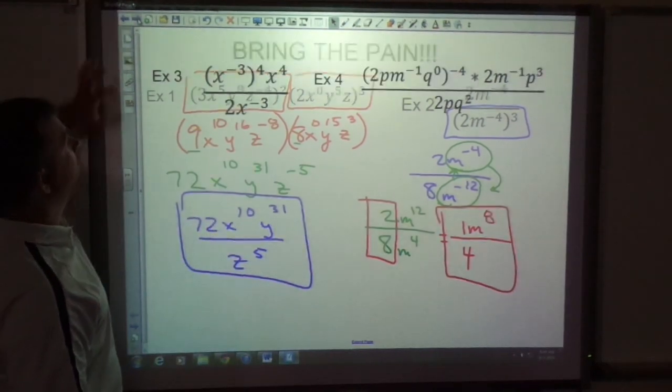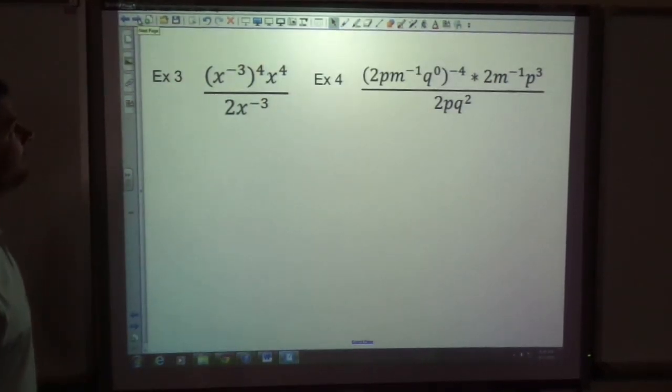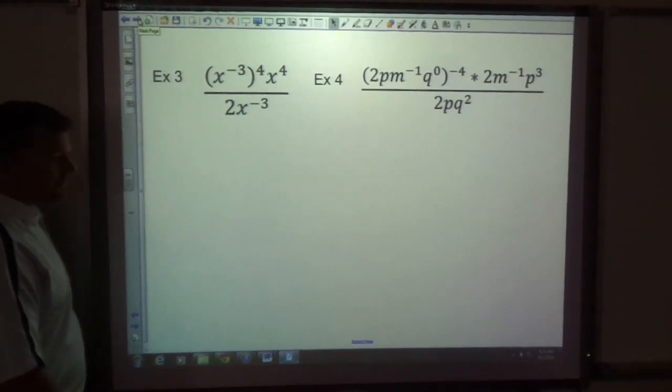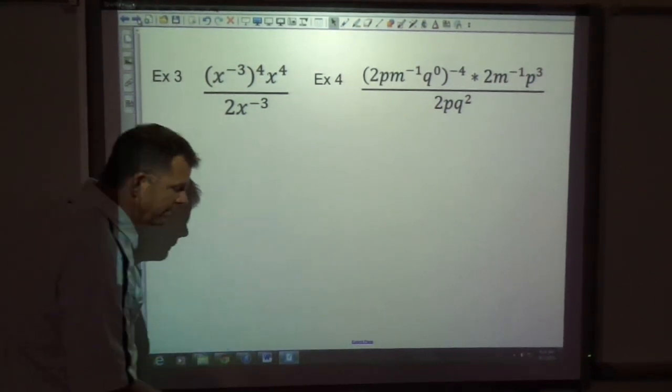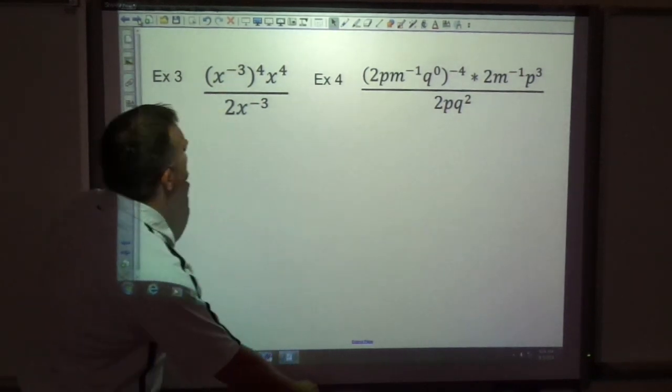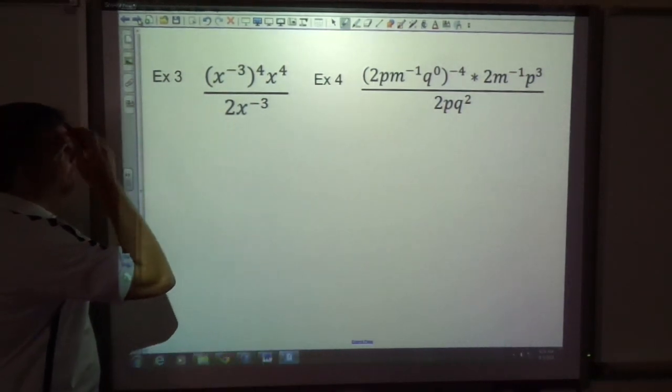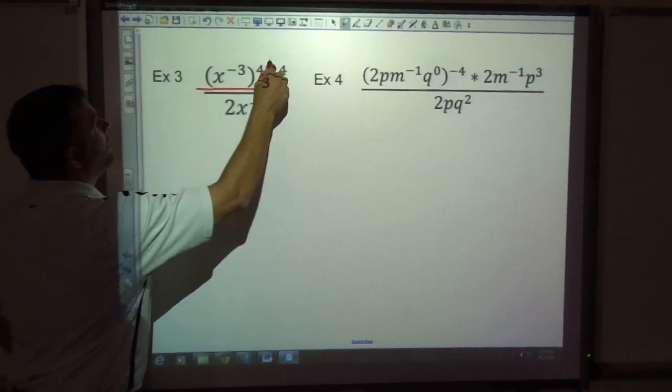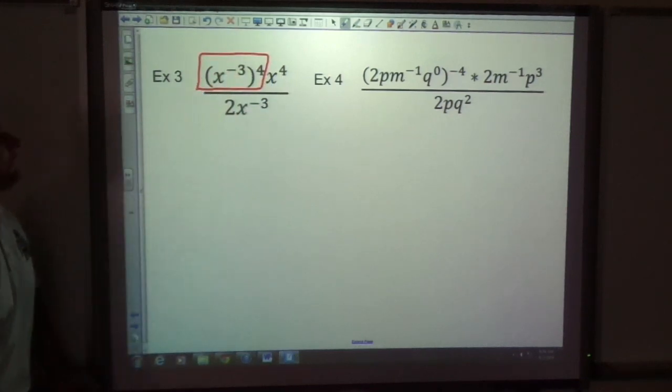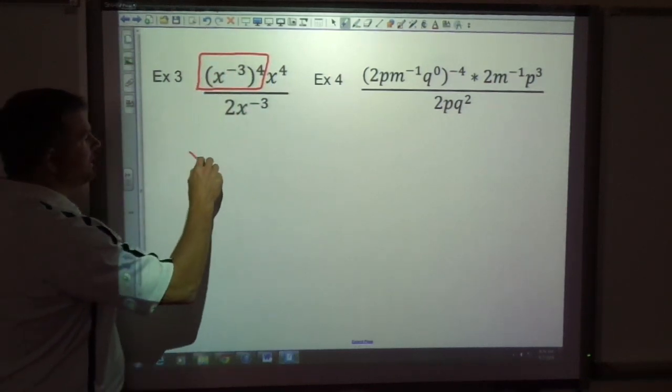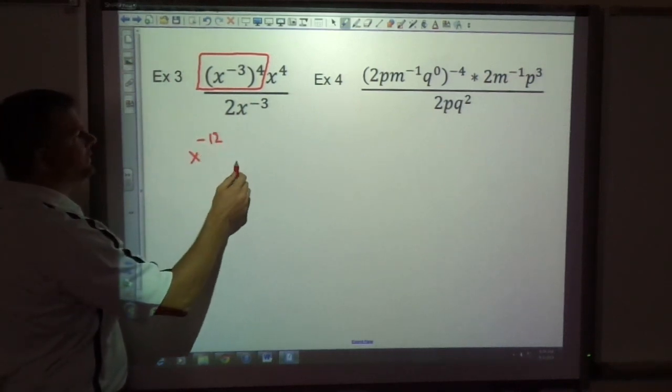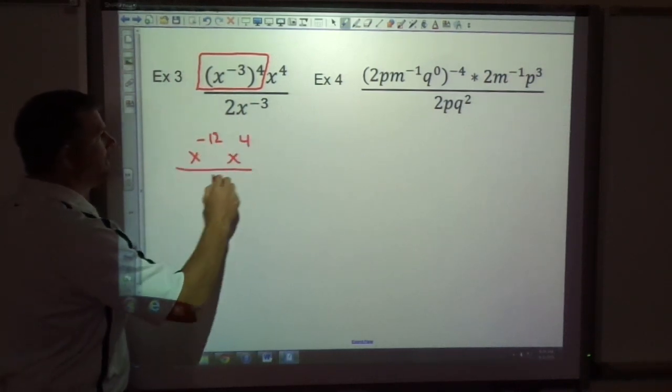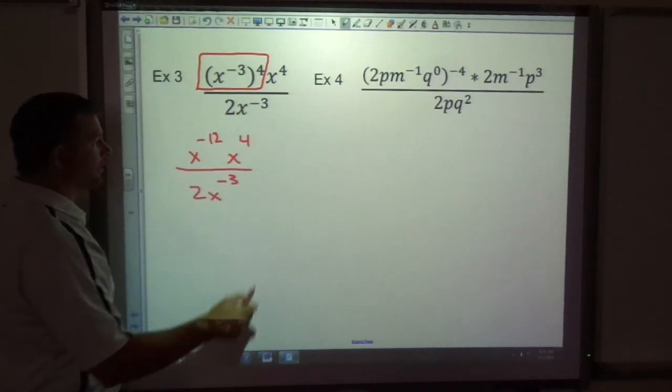All right. Next ones. If you need to pause this to be able to write these down before I begin, that's probably smart. But I'm just going to go ahead here. Do I have power to power? Yes, I do. I have x to the negative 3rd to the 4th. So that gives me x to the negative 12th. Everything else I'm just going to write the same. X to the 4th, 2x to the negative 3rd.